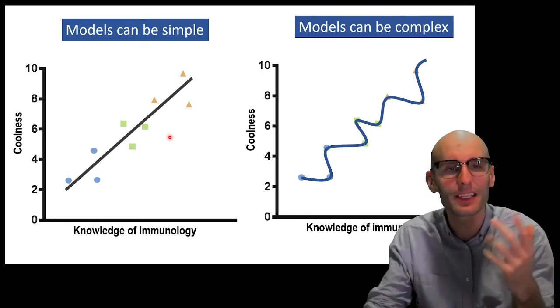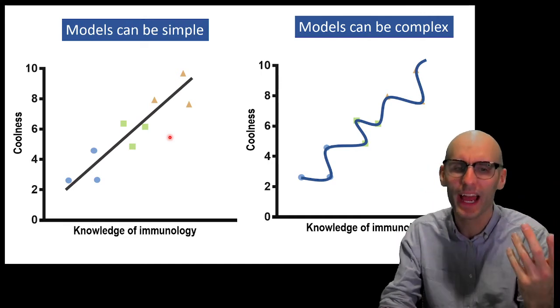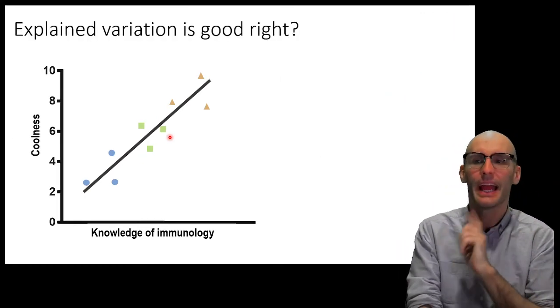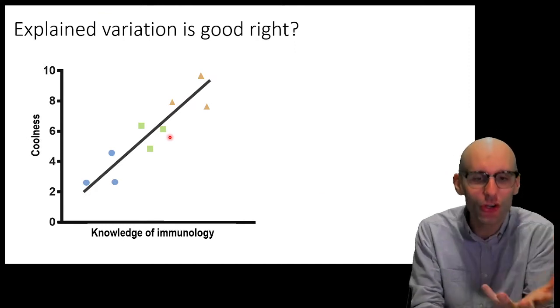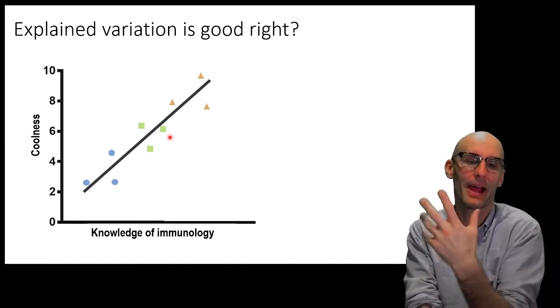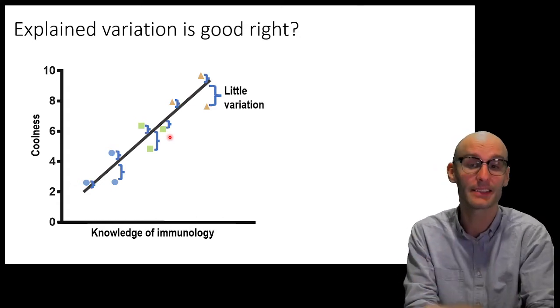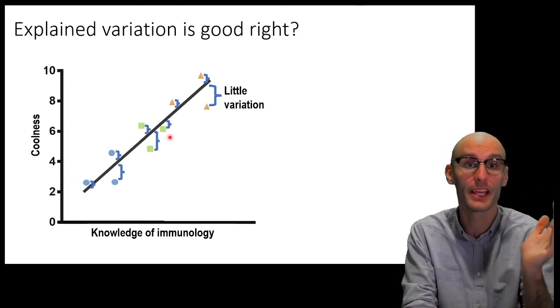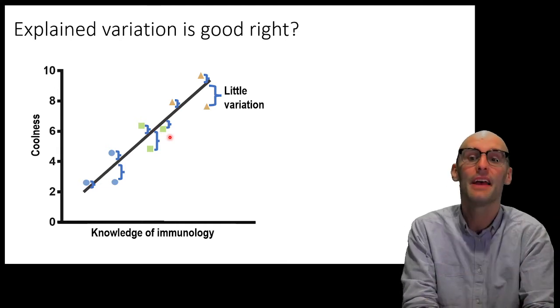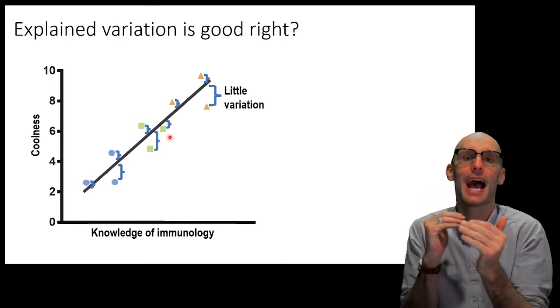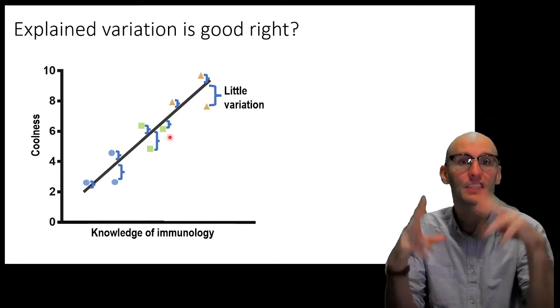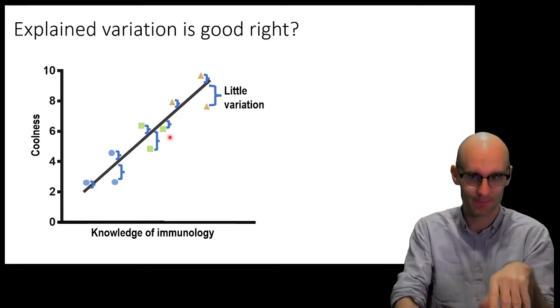Now, wouldn't a complex model be better? Wouldn't you just want a complex model? Because explained variation is good. If we remember how our stats tests often work, is they take a set of data like this, they run a model over it. So, this is a linear regression, but this could be a mean.